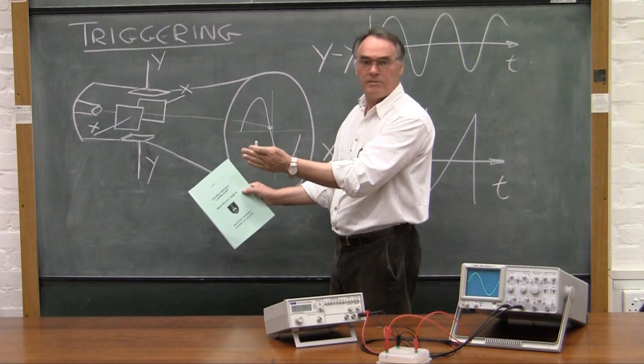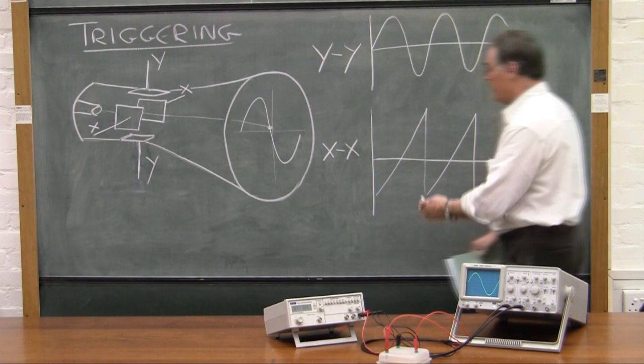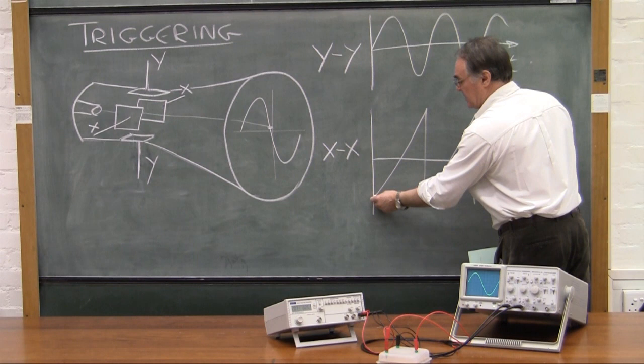And what happens on these X plates, which is the time base, there is what we call a sawtooth function applied. In other words, it starts at some negative voltage, creeps slowly up to a positive voltage and then flies back.